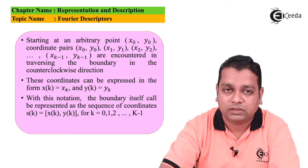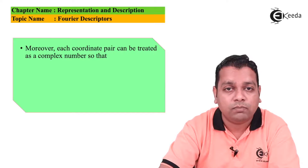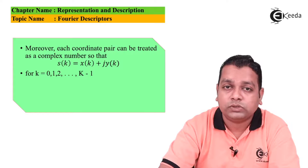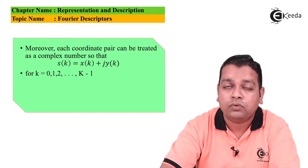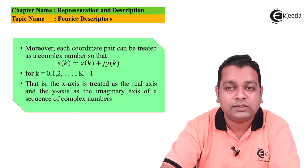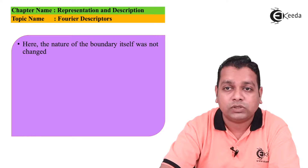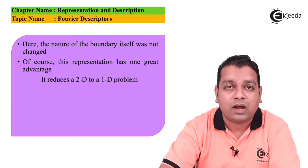Moreover, each coordinate pair can be treated as a complex number, so that s(k) = x(k) + j·y(k), for k = 0, 1, 2, ..., K-1. This means the x-axis is treated as the real axis and the y-axis as the imaginary axis of the sequence of complex numbers. The nature of the boundary itself is not changed, but this representation has the great advantage that it reduces a two-dimensional to a one-dimensional problem.